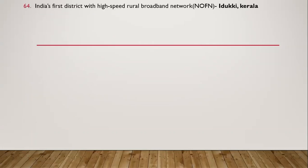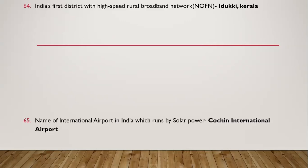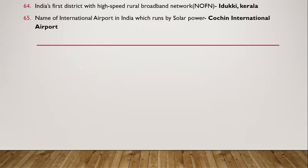Question 64: India's first district with high-speed broadband network — it was Kerala. Question 65: Name of the international airport in India which runs on solar power — it is Cochin International Airport.